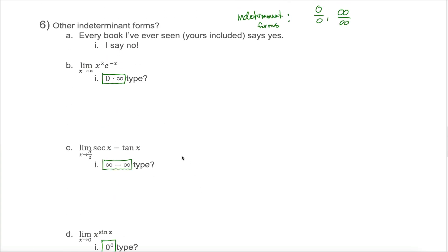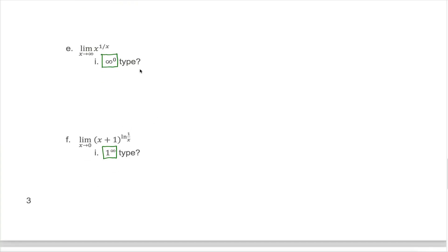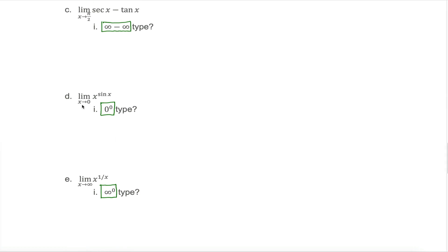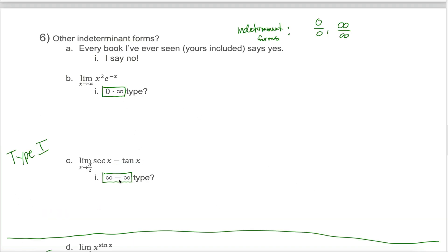Instead of memorizing all the different types of indeterminate forms, you just need to consider two cases. The first is when the base and the exponent both contain variables — that's Type 2. If that's not the case, you're in Type 1. For Type 1, consider something like zero times infinity. Suppose you're asked to evaluate the limit as x approaches infinity of x squared times e to the negative x — you don't even need to worry about identifying it as the zero times infinity type.